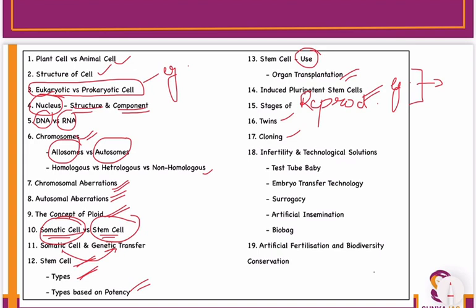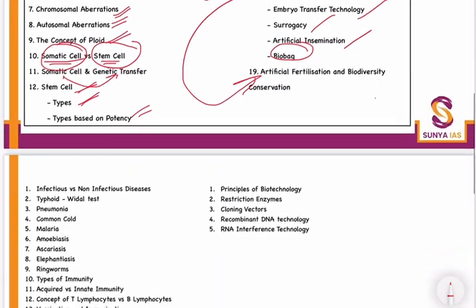Then you have to do infertility and the technological solutions for it — for example, what is test-tube baby embryo transfer technology, surrogacy, artificial insemination, and biobag. Then cover how artificial fertilization helps in the field of biodiversity conservation.